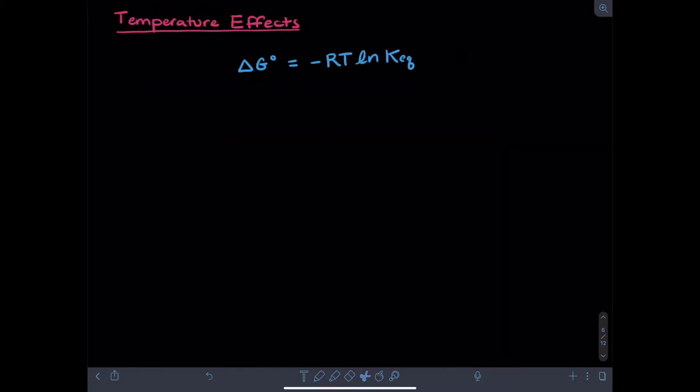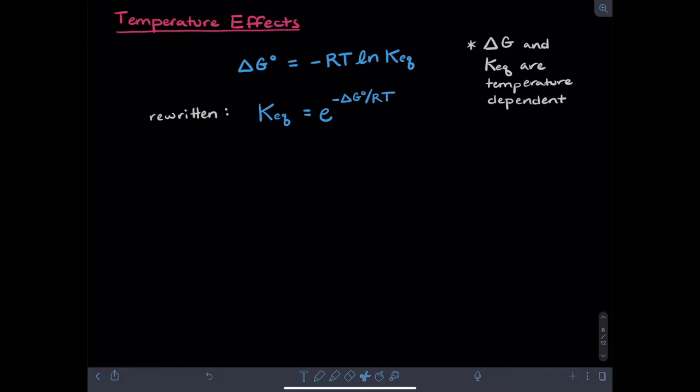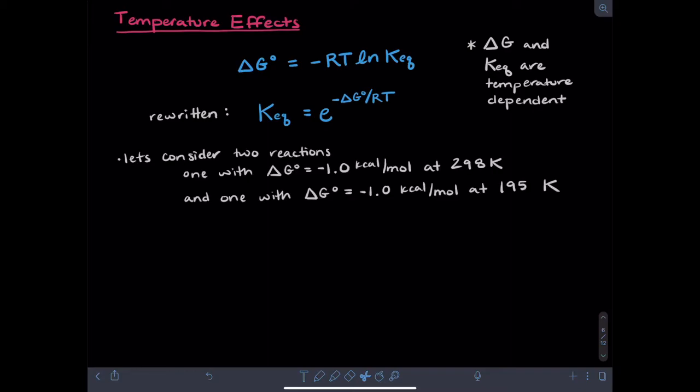I now want to talk about temperature effects on Gibbs free energy and equilibrium constant. Notice that this expression for Gibbs free energy features a temperature term. And similarly, if I wanted to rewrite this equation in terms of separating out the equilibrium constant, notice that both our Gibbs free energy and equilibrium constant are temperature dependent. So we could consider two reactions — imagine one of them having a free energy of negative one kilocalories per mole at room temperature, which is 298 Kelvin, versus a hypothetical separate reaction which also has a Gibbs free energy of negative one, but that Gibbs free energy is measured at 195 Kelvin instead.